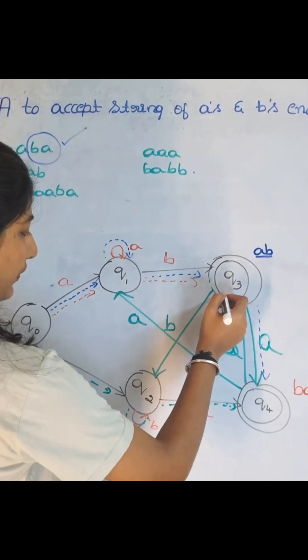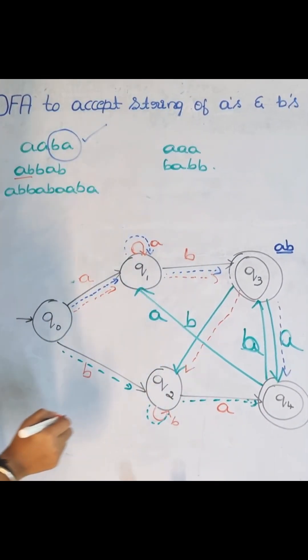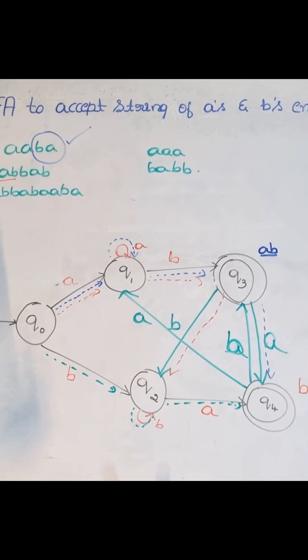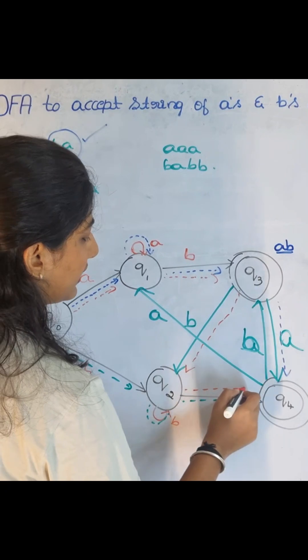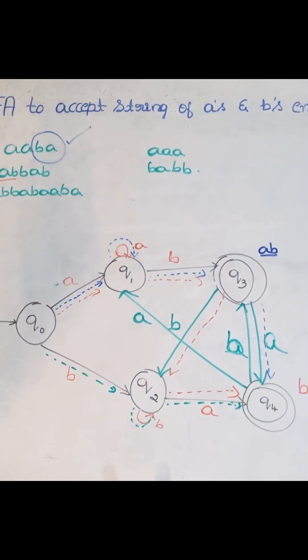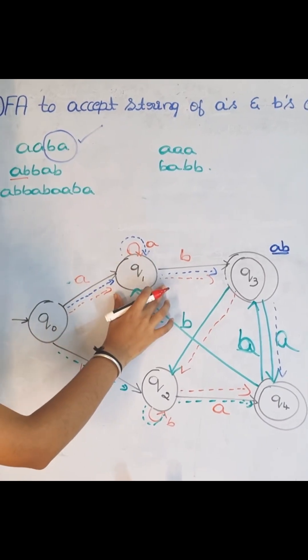I got B again. So if I got B, I am moving to Q2 state. Now I got A again. So if I got A here, I am moving to this state. Look here, how this circle goes. It is here. On A, it is going to Q1 state.